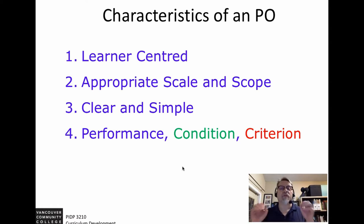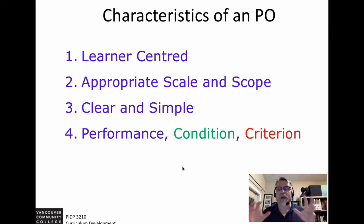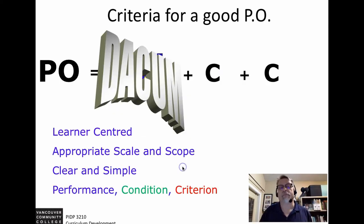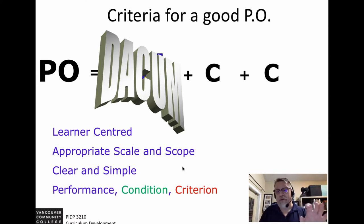The characteristics of a good performance objective: they have to be learner-centered, appropriate scale and scope, very clear and simple, and the performance, the condition, and the criteria have to be clearly defined. Performance objectives come out of your Dacum — they're learner-centered, appropriate scale and scope, clear and simple, with a defined condition and criteria.